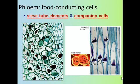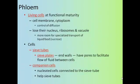Phloem cells are alive at maturity, but they spit out their nucleus, ribosome, and vacuole to make more room for sugars so they can push that sap through the plant. There are specialized structures at the end of phloem cells called sieve plates that help facilitate the movement of sugar between cells. Companion cells are really important to the phloem because they give the phloem the extra ATP it needs to move that sugar.